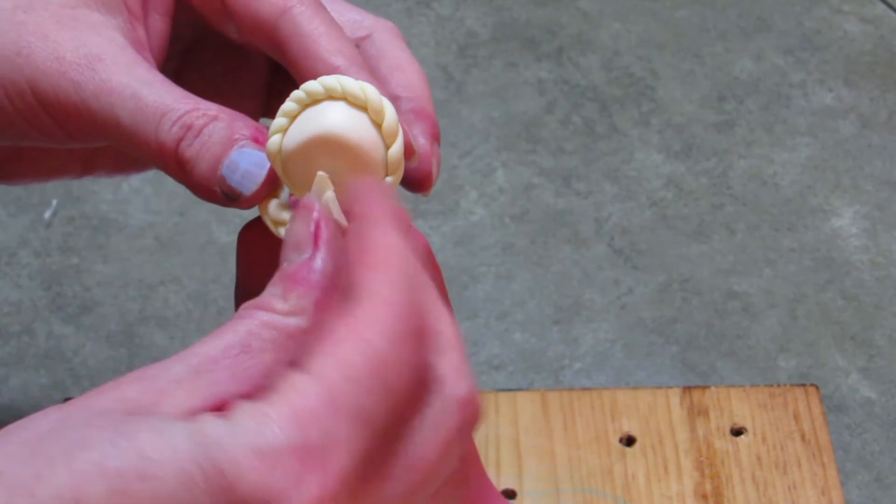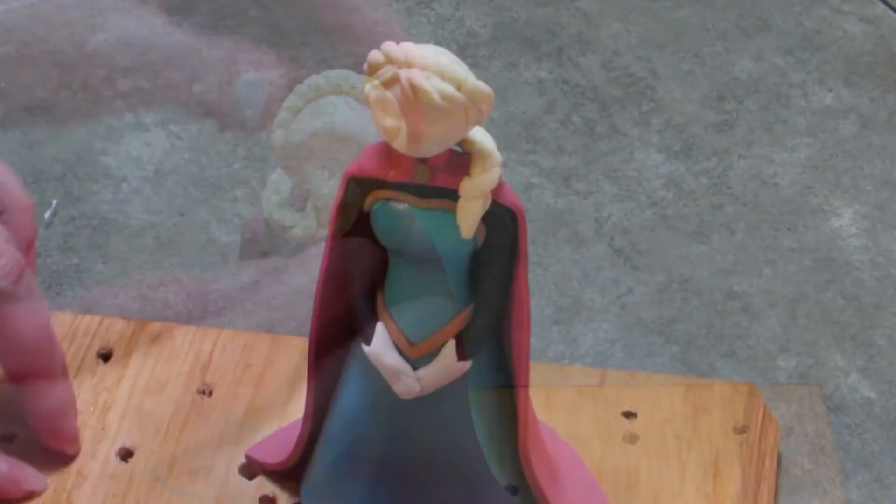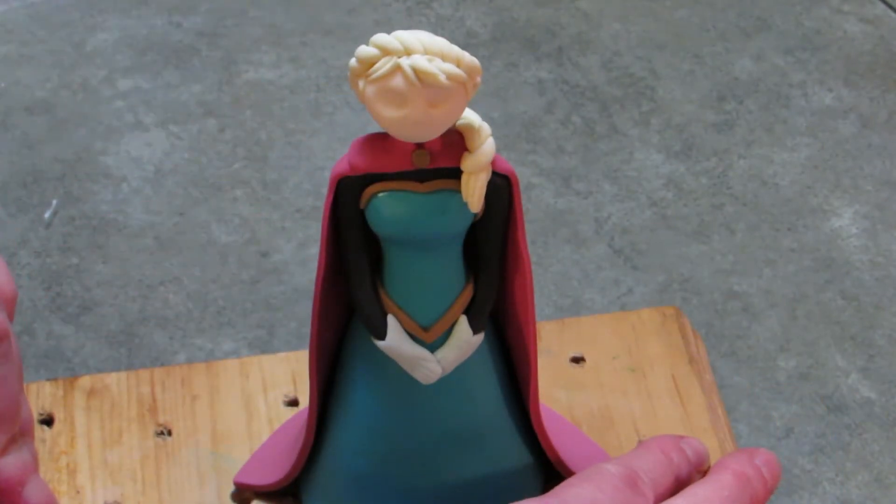You attach it with a little bit of water in the back. If you're going to have the braid, you got to attach it first because the other hair will lay on top of it and if the braid's on top it will not look right.